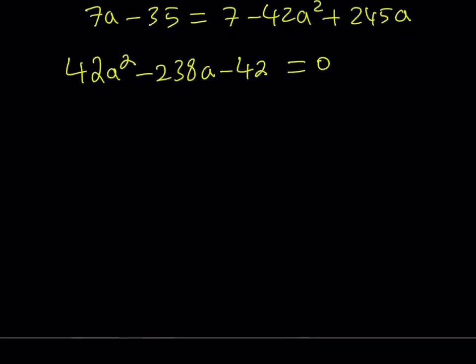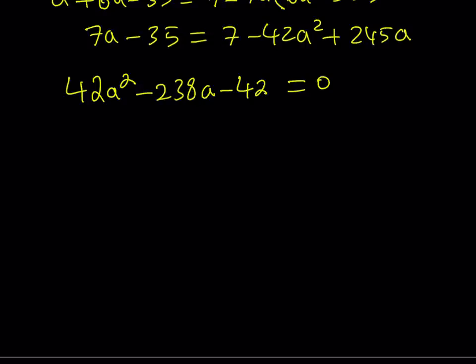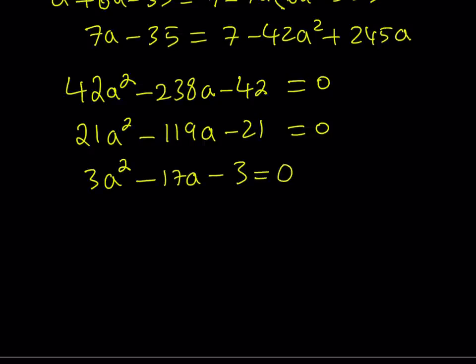Now I got my quadratic, but one thing that will help a great deal here is to simplify this equation. We can actually divide both sides by something. If you don't see it right away, let's divide everything by 2 first. Hopefully after division by 2 this will become more clear. Now this is my equation. And 119, I kind of know that it is 7 times 17, which means I can divide everything by 7 again. So basically we divided both sides by 14. This gives us 3a squared minus 17a minus 3 equals 0. Obviously this is much nicer than the previous equation.